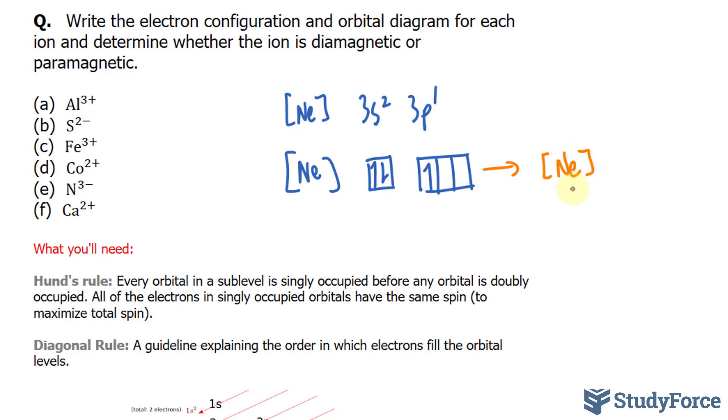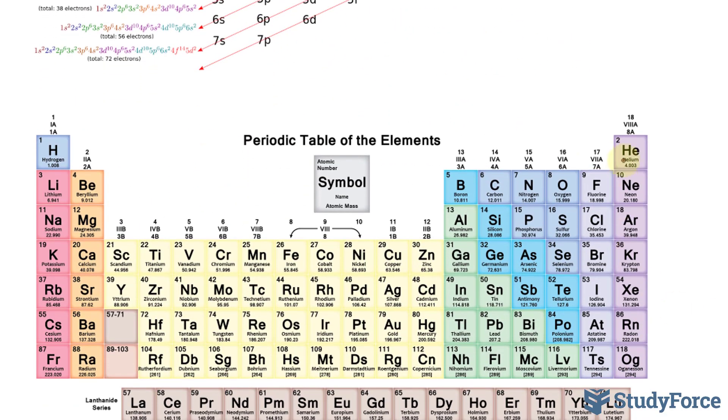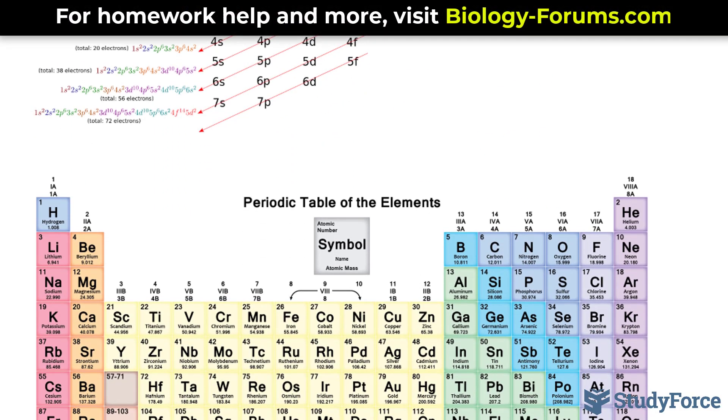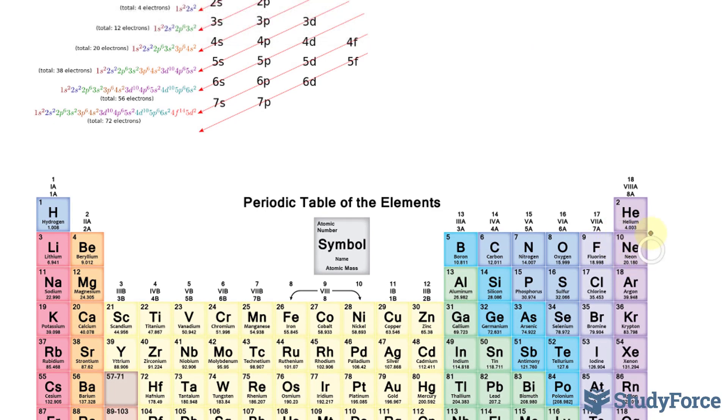Leaving us with only the electron configuration for neon. You can write it as just neon, like this, or you can write it as the preceding noble gas, helium. Therefore, we'll have helium, and three electrons removed from aluminum makes us having to write the electron configuration for neon.